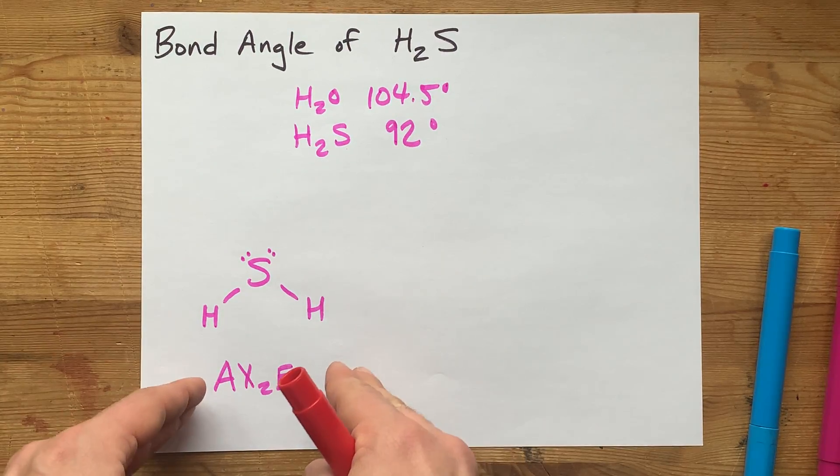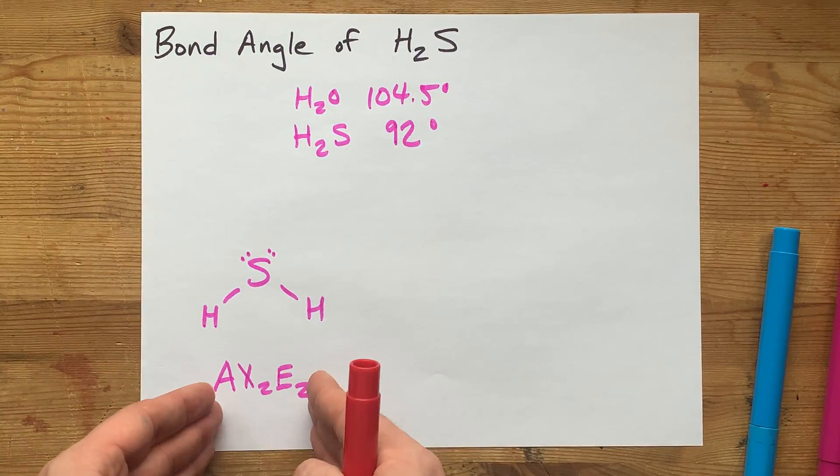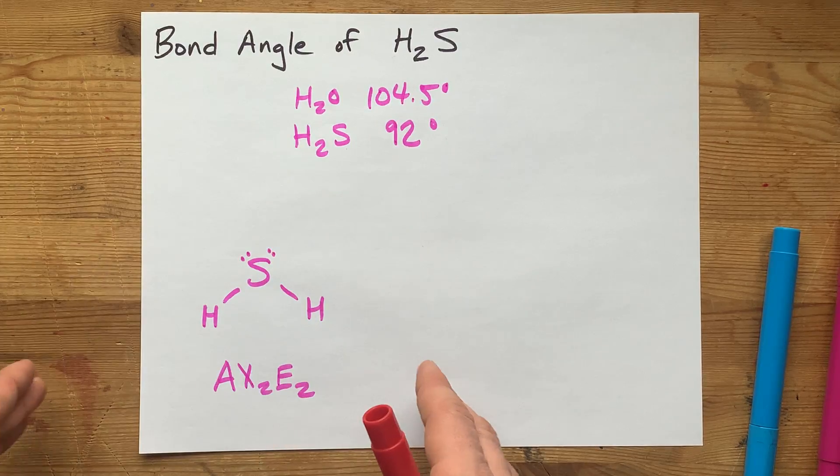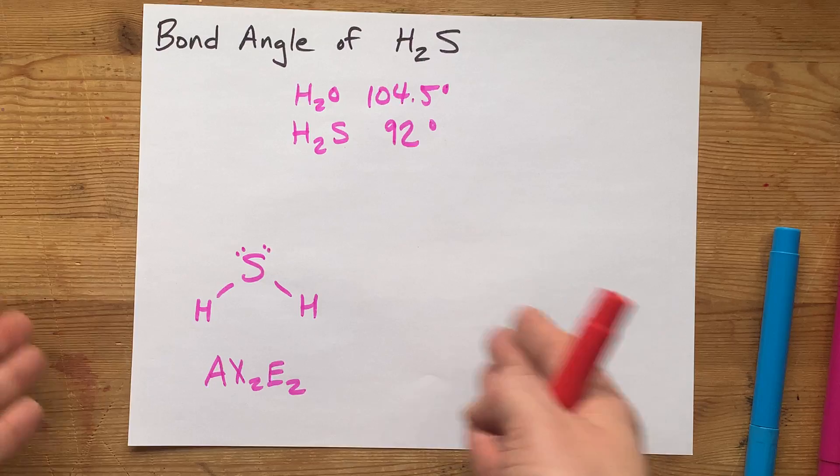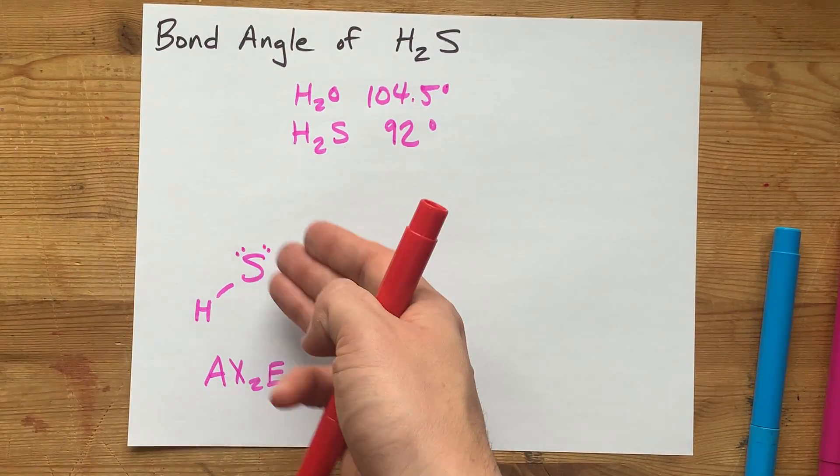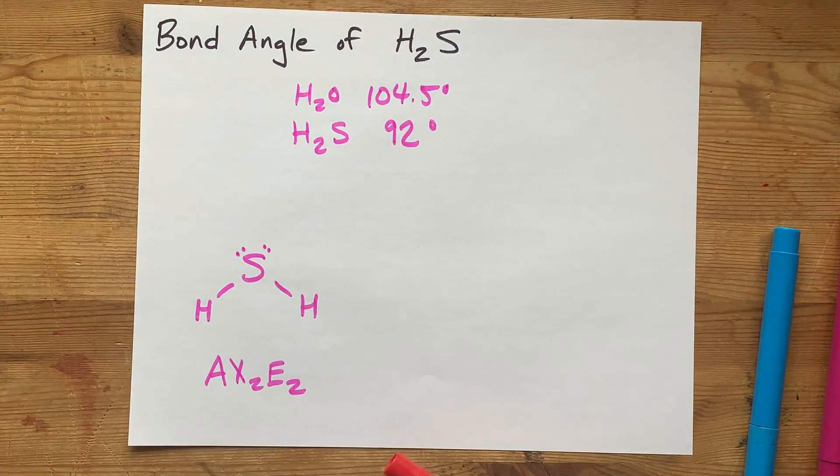And therefore, they can get pushed together a little more aggressively by these lone pairs because they're not as close to each other, by virtue of the large sulfur in the middle separating them.